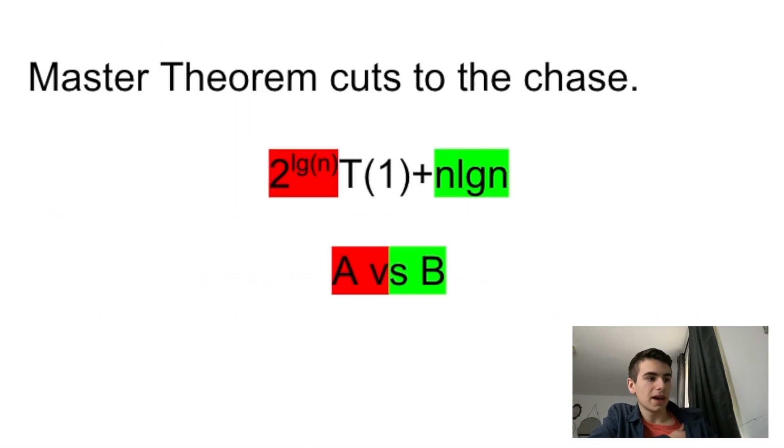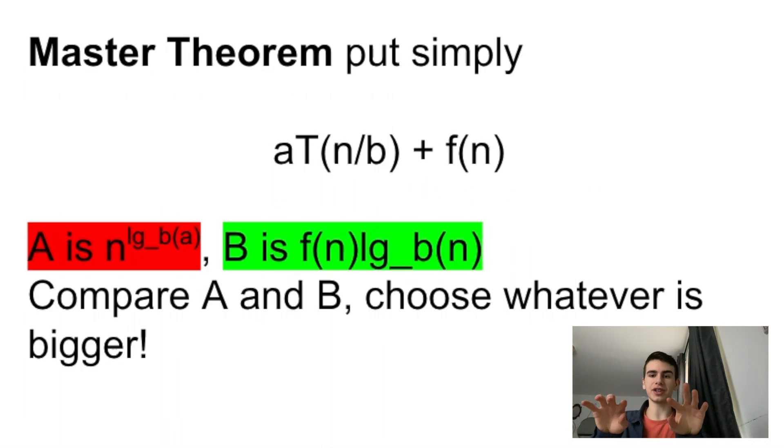And then the big B with the f(n) * log_b(n), that's just the fact that you have this recurrence, this relation, this recursive tree. And the height of this tree will always be log_b(n), or will usually be that. So then you can express B in that form. And then what you do is you just compare big A and big B, and you choose whatever's bigger, because that's just what you do in recurrence relation. This is just giving you a shortcut.